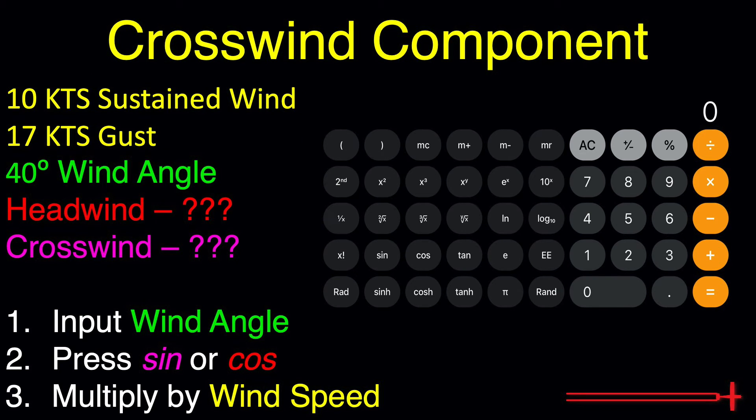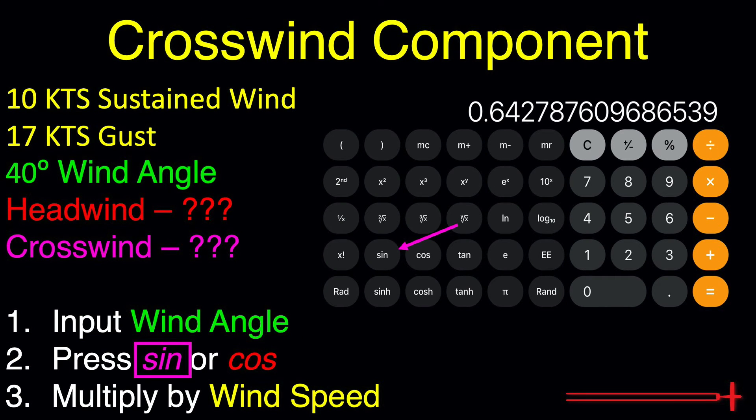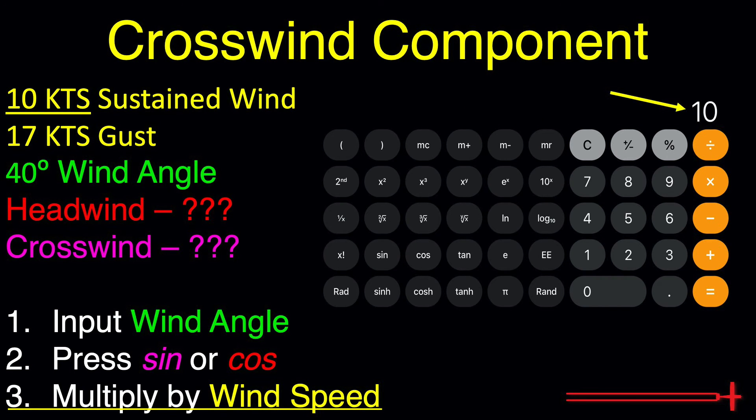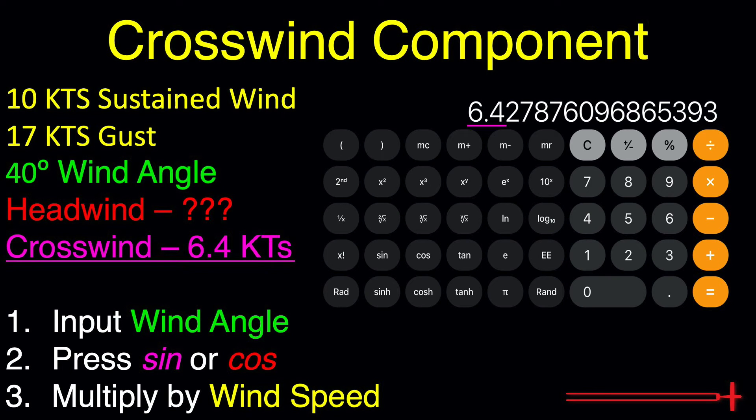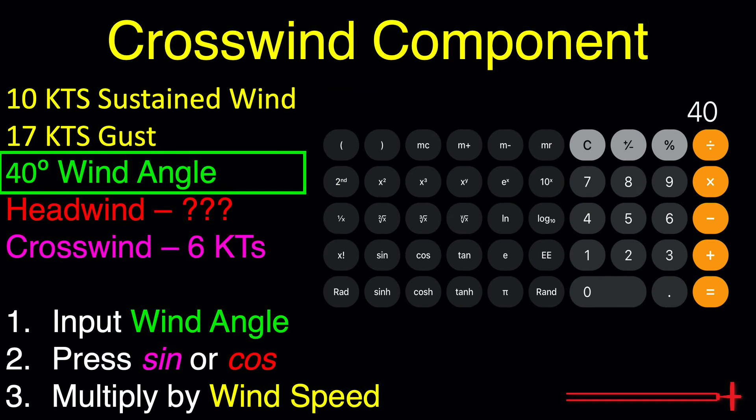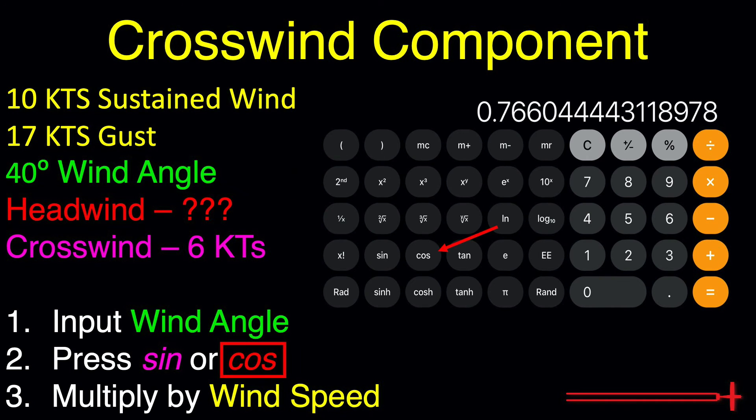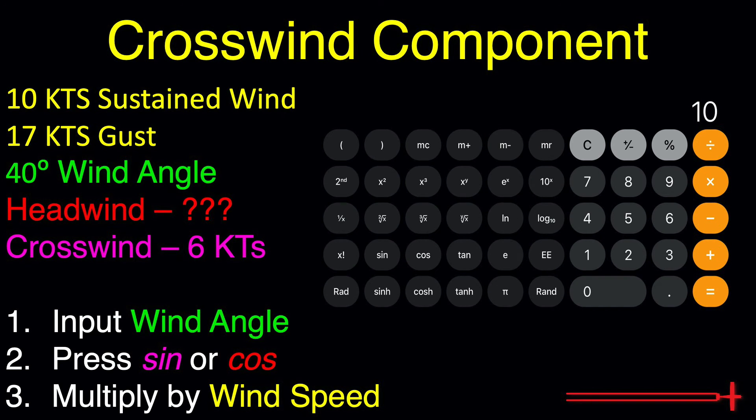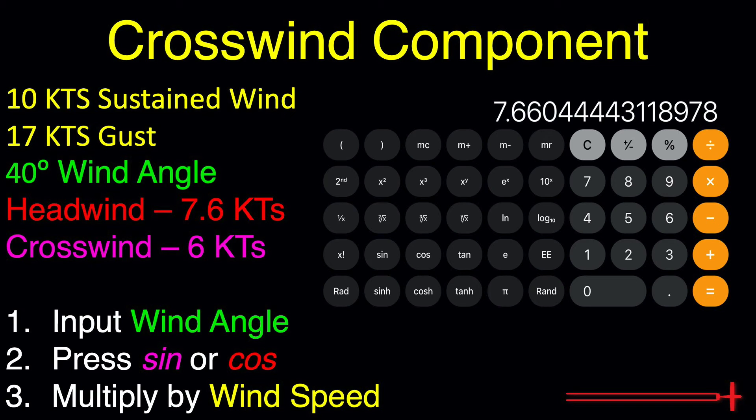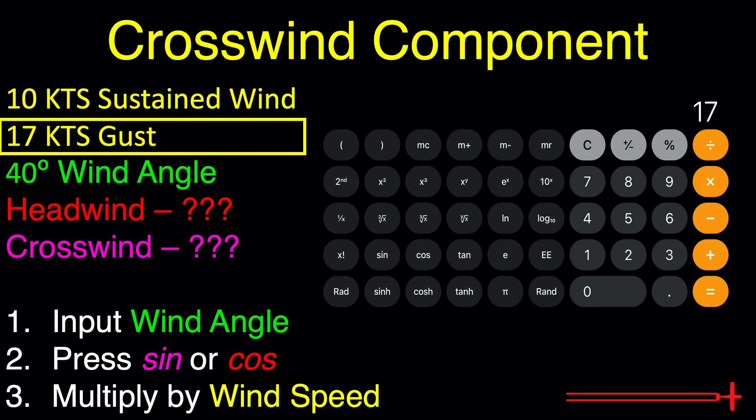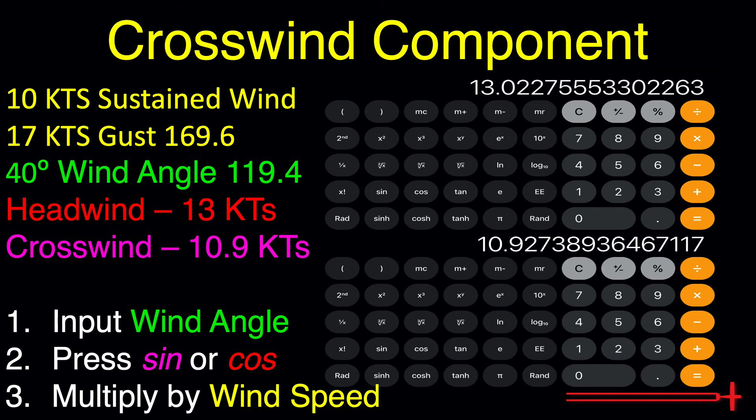Now, let's put this formula into action. Step one, input our wind angle of 40. Step two, press SINE to find crosswind. Step three, take this big decimal and multiply it by our sustained wind speed of 10. That's it! We're left with our sustained crosswind component of 6.4 knots. You can just say 6 if you want to. To find headwind, we'll input our wind angle of 40 again, press COS this time, multiply by our sustained wind speed of 10 again, and we've found our sustained headwind component of 7.6 or roughly 8 knots once we're done rounding. Repeat these steps, plugging in 17 instead of 10 in step three, and you've found your gusting crosswind and headwind components of 10.9 and 13 knots respectively.